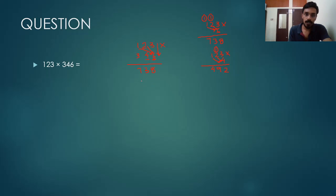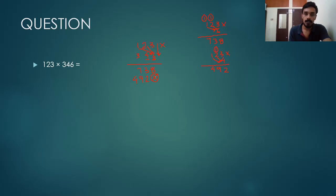In the second step, we write the digits starting from the tens place. Continuing: 2 times 4 is 8 plus carry 1 is 9, and 1 times 4 is 4. So the second step gives us 492, written with an offset.